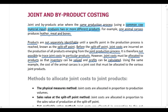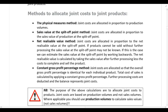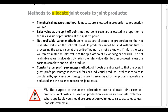We are going to look at four different methods that can be used to allocate joint costs to joint products. These are: the physical measures method, the sales value at the split-off point method, the net realizable value method, and the constant gross profit percentage method. I will go through each of those in detail when we get to our lecture examples.